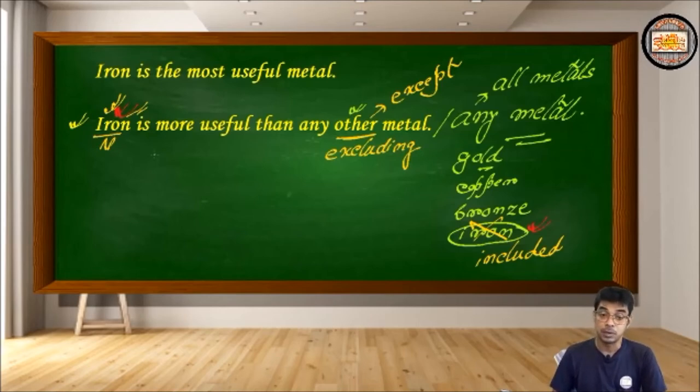So what happens when you put any metal? You actually make a very tricky comparison which mars the spirit of the sentence. Iron is more useful than iron. But when other is used, we put the list: iron is more useful than gold, than copper, than bronze, than silver. But we won't say iron is more useful than iron because here with other, iron gets excluded.